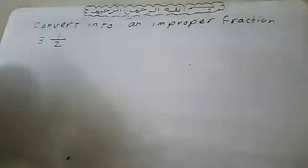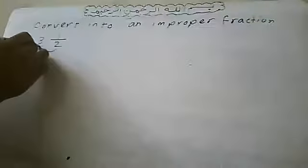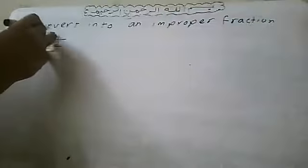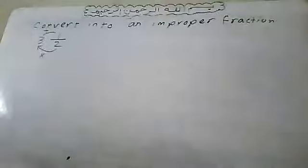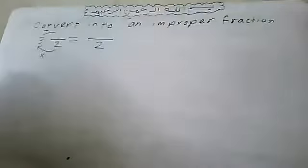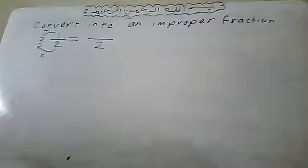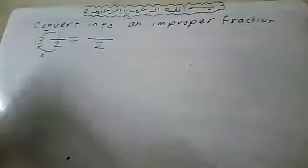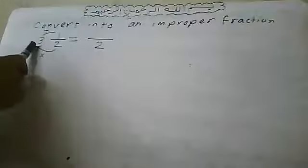How? Two steps: first, two times three equals six; then add one — six plus one equals seven. So the mixed number converts to the improper fraction seven over three. In an improper fraction, the numerator is greater than the denominator.